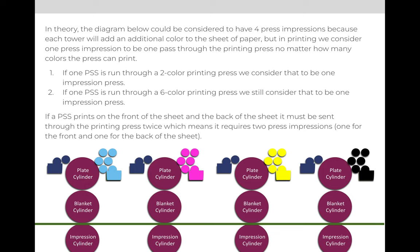When we talk about impressions, every sheet of paper that you print — every press sheet — will only have one or two impressions. If only the front of the sheet of paper prints, it has one impression. If you have to flip that sheet over and send it back through the press, it has two impressions because you print the front, flip it over, and then you print the back.